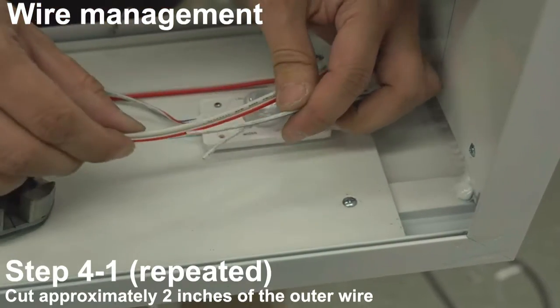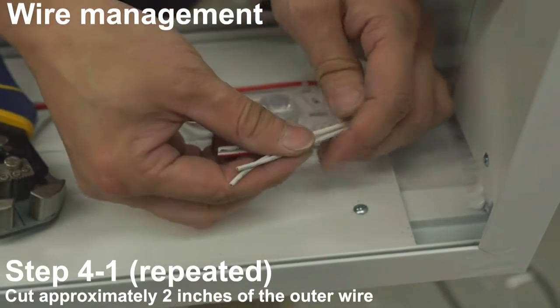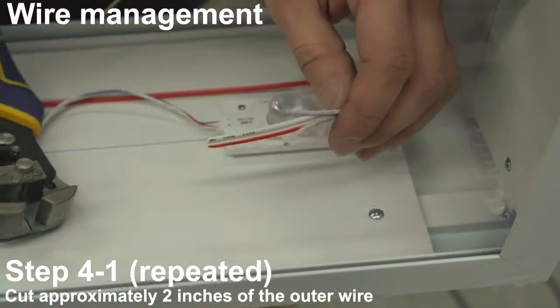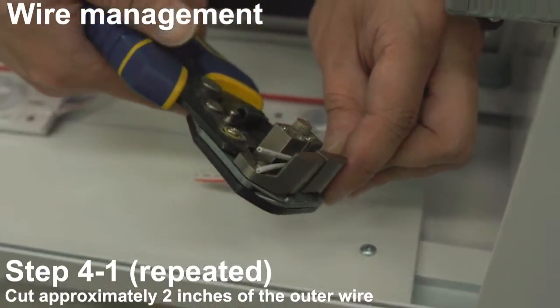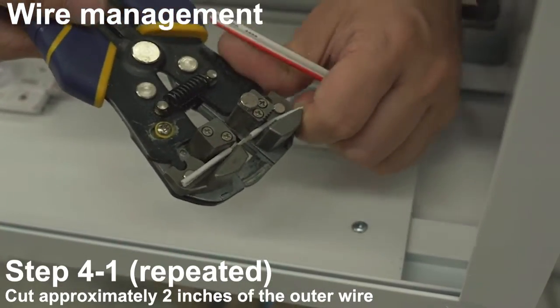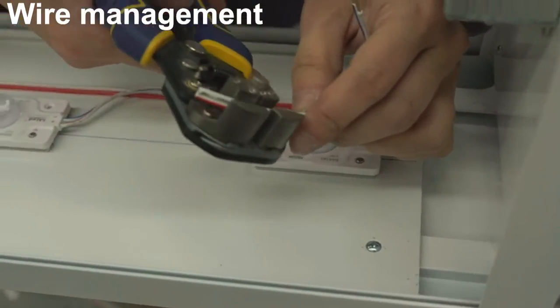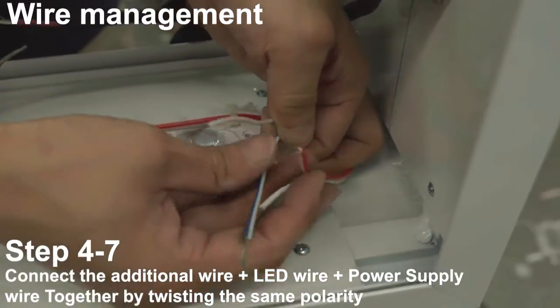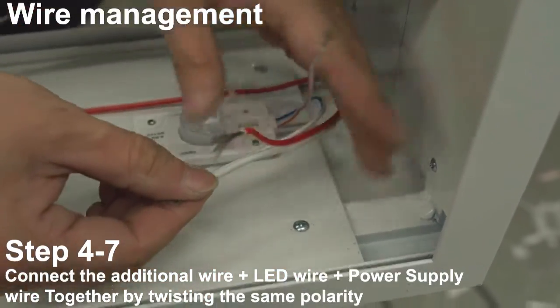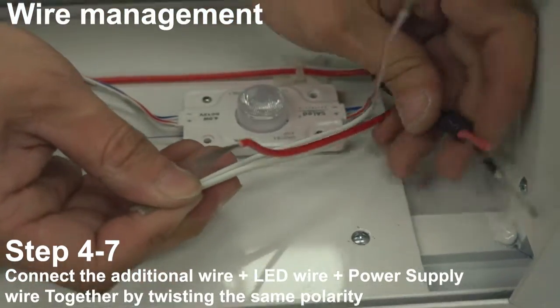Cut approximately 2 inches of the outer wire. Connect the additional wire plus LED wire plus power supply wire together by twisting the same polarity.